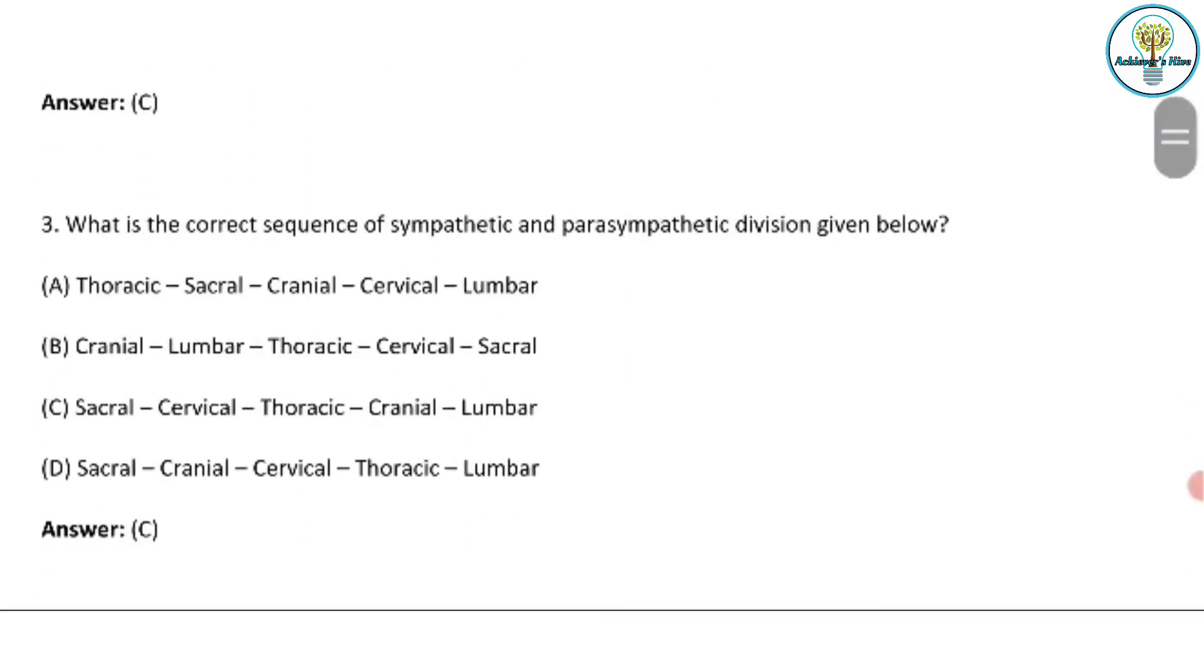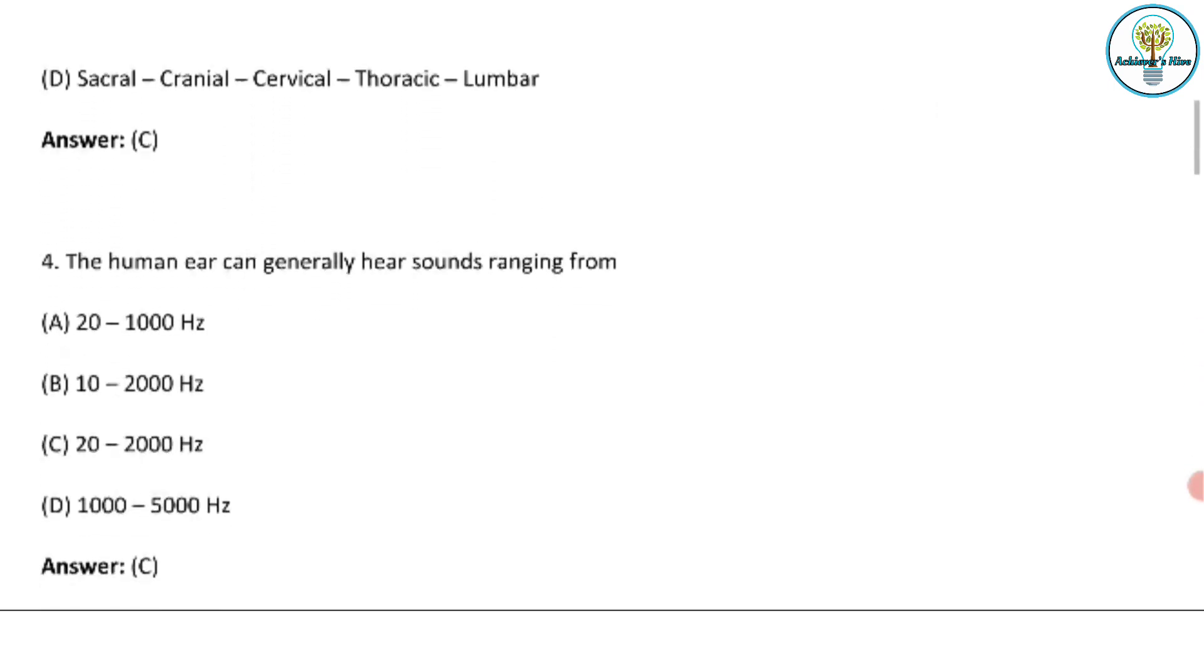What is the correct sequence of sympathetic and parasympathetic division given below? This you have to remember because this is the order, this is the correct sequence which we have to remember. This question is based on the biological basis of behavior. So option C is the correct one.